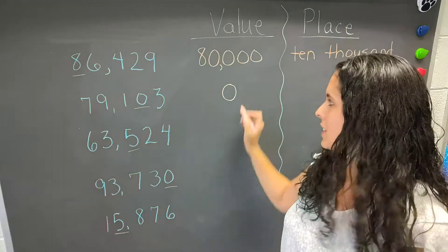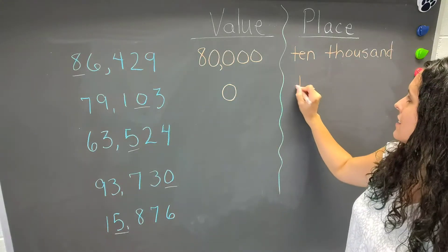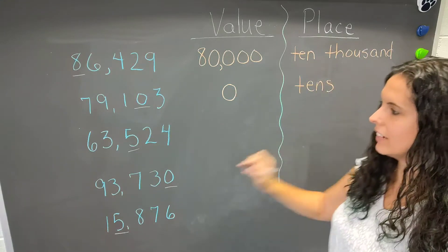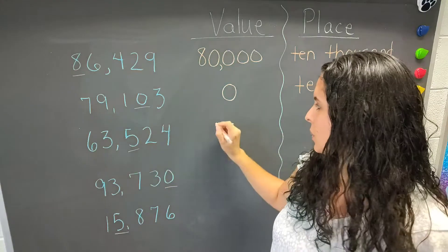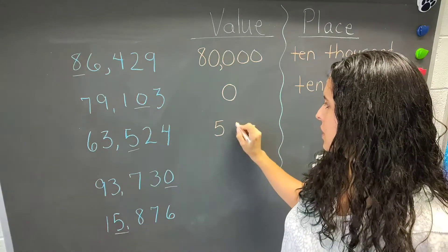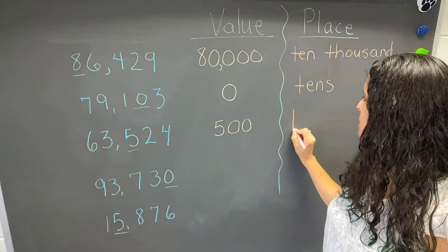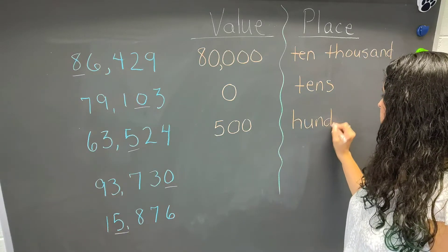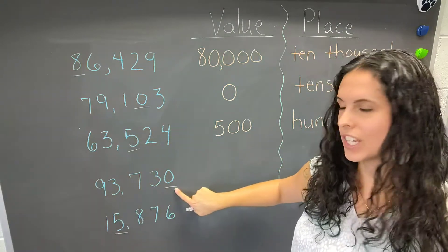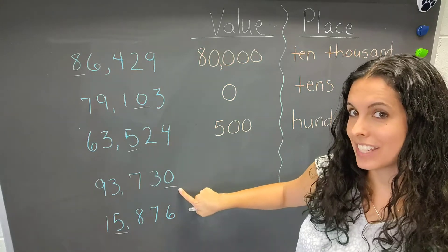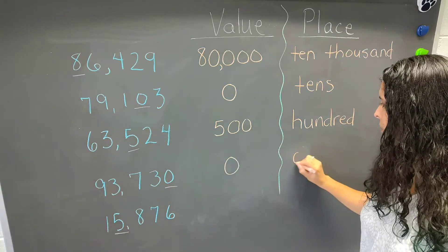I've had students in the past put two zeros because it's in the tens place, but that's not required. So it is in the tens place. Our next number is 63,524. The five is underlined, so we put the five. There are two zeros going here. The value of the five is 500, because it is in the hundreds place. Our next number is 93,730. This is also a zero — it's in the ones place. The value is zero, and it's in the ones place.